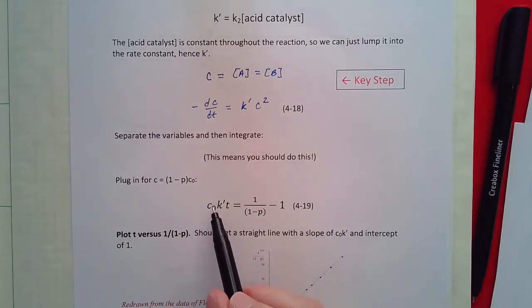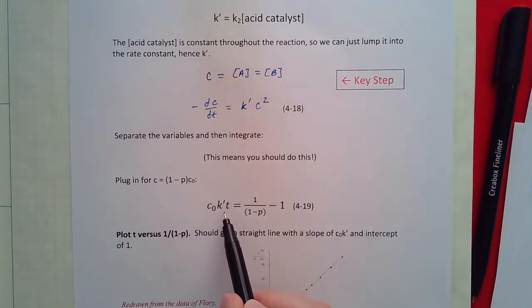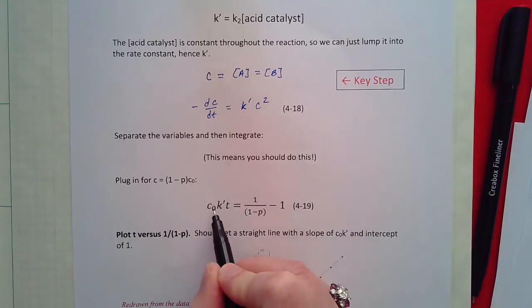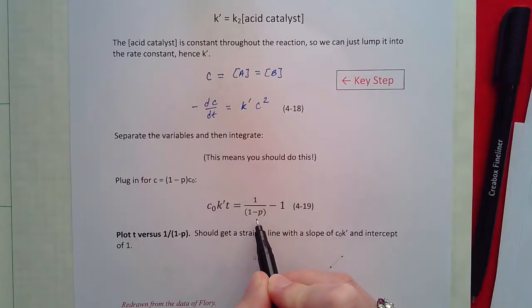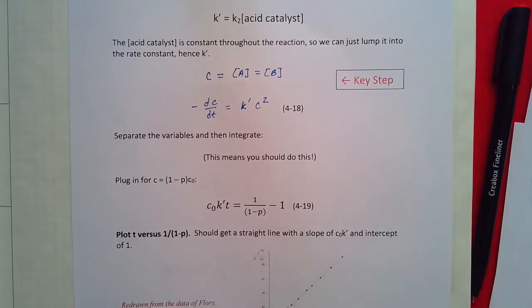Okay, so we've got the initial concentration times the rate constant times time. So that is mx, 1 over 1 minus p is our y, minus 1 is the b, right?